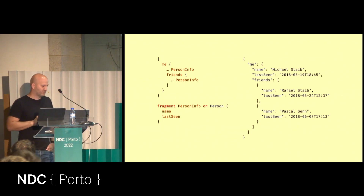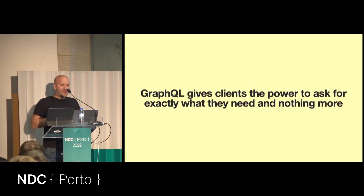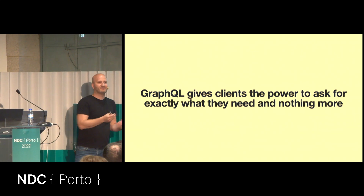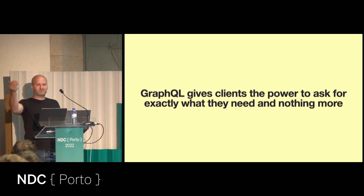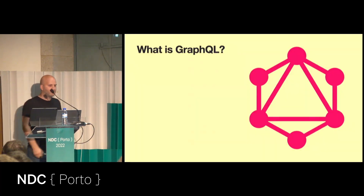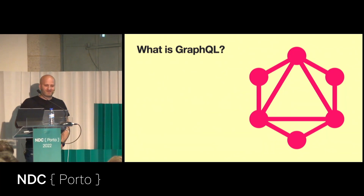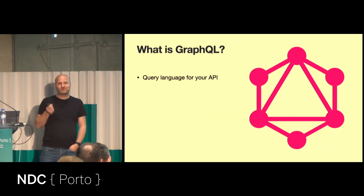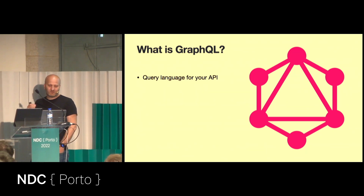So GraphQL empowers the developer that builds the frontend or consumes the data, not the backend developer thinking in a certain use case that might already be outdated. What is GraphQL? If you look up the GraphQL.org description, it will say it's a query language for your API — not a query language for your database. It's a query language for your API. And it's a runtime for your queries — it's not just a schema like in Swagger; it's really enforced. We have a full type system like in C#.